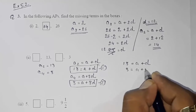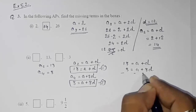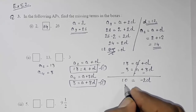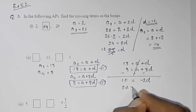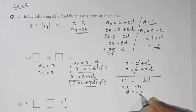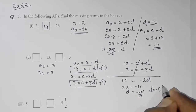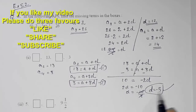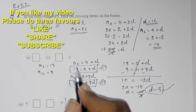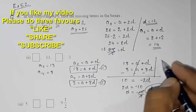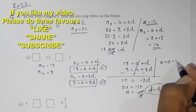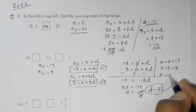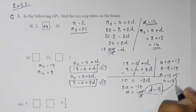Subtracting equation 2 from equation 1, the 'a' terms cancel. We get: 13 − 3 = −2d, so 10 = −2d, giving d = −10/2 = −5. The common difference is −5. Now substituting d = −5 into equation 1: a + (−5) = 13, so a = 13 + 5 = 18. The first term is 18.